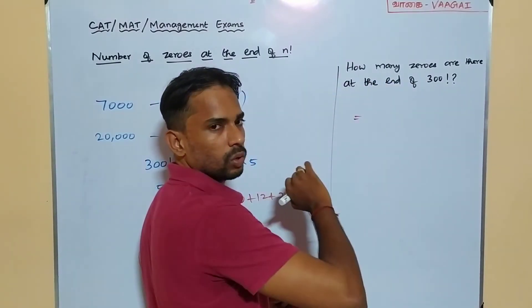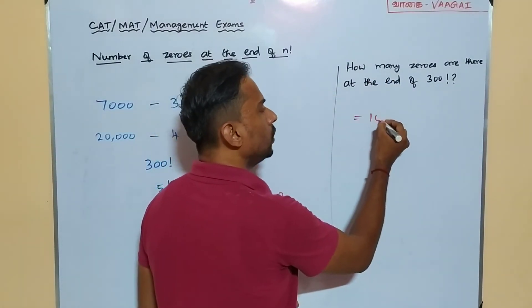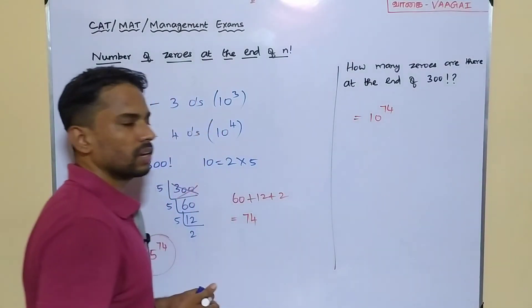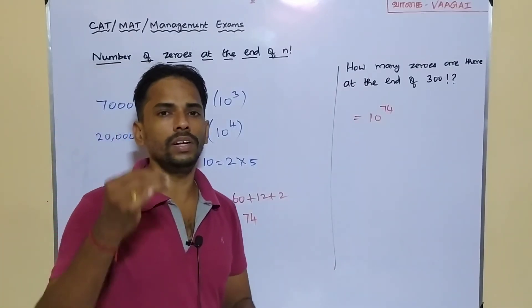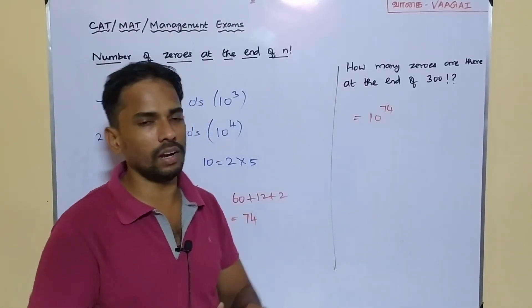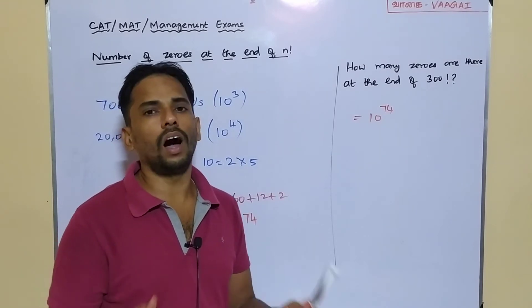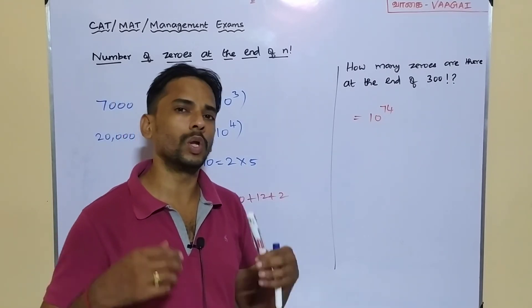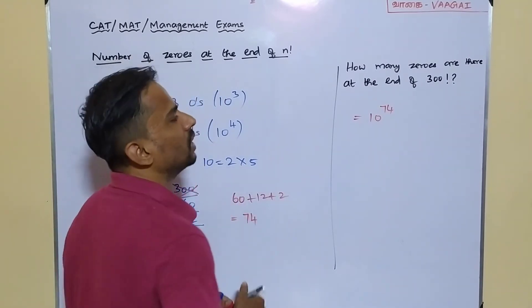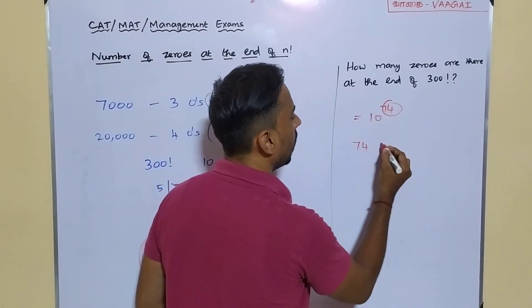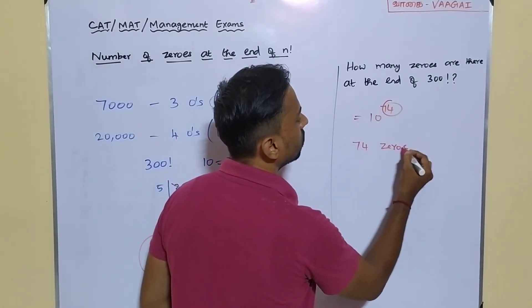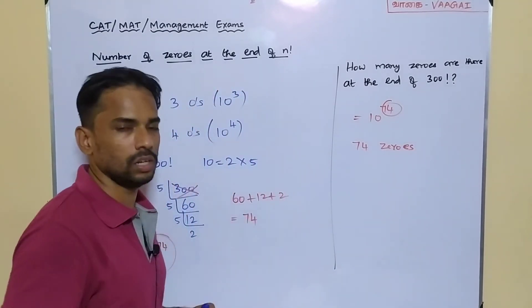Inside this 300 factorial, we can maximum collect 10 to the power 74. That is, we can find 74 tens inside this 300 factorial. That means our 300 factorial is going to end up with how many zeros? There are going to be 74 zeros. So the answer to the question will be 74 zeros.